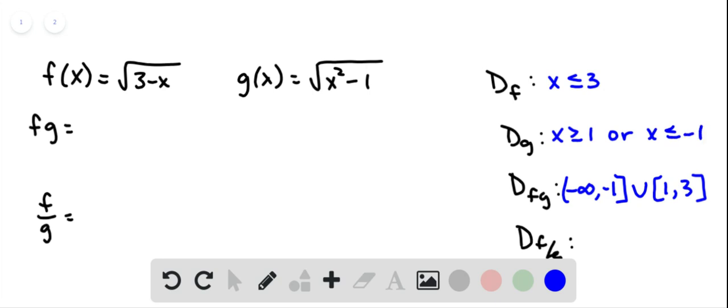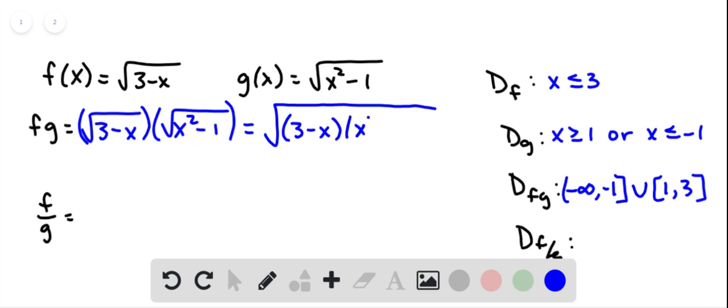So we have the square root of 3 minus x times the square root of x squared minus 1. Now we could combine these into one single square root sign. So we have the square root of 3 minus x times the quantity x squared minus 1. And we could go ahead and multiply that out if we want to simplify it.